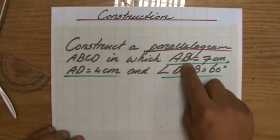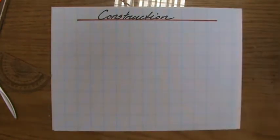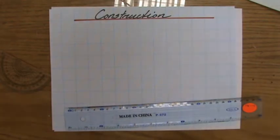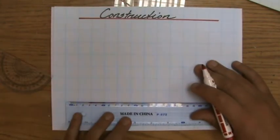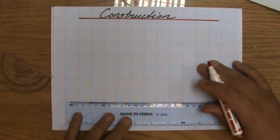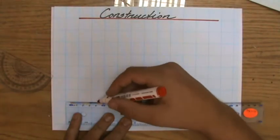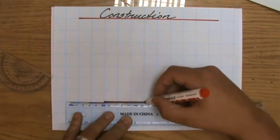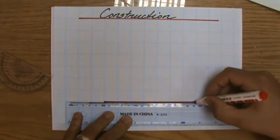Let's start with that base AB, 7 centimeters. With my sharp pencil and my ruler, I draw a line of 7 centimeters. I'm going to pretend that each of these squares is 1 centimeter long. So 1, 2, 3, 4, 5, 6, 7 of them.